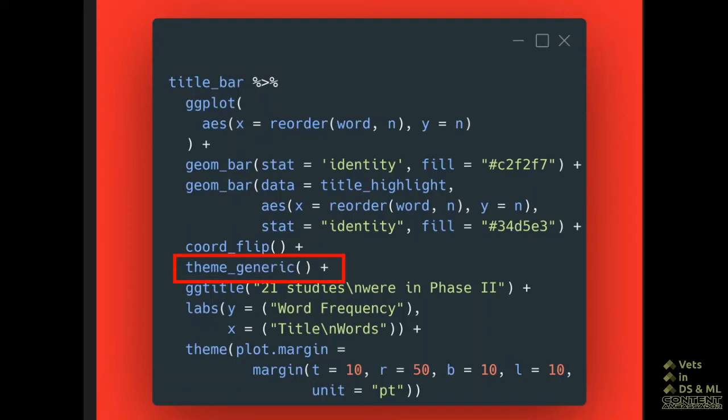Simply say theme underscore generic, parentheses, and then I add in the next elements. So it's very simple once you've got it there, and it's one line ready to go for you.